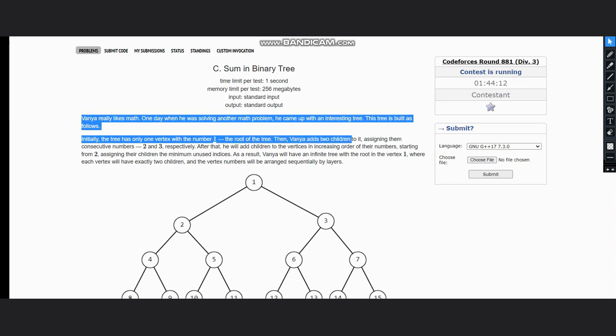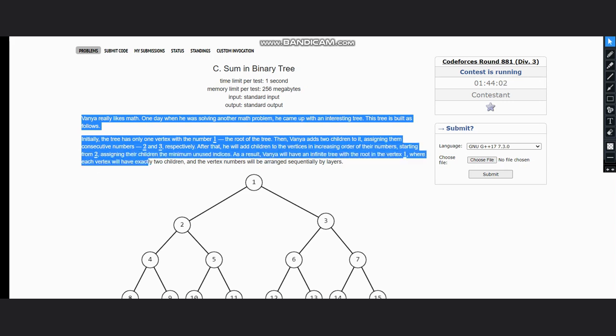This tree is built as follows: initially the tree has only one vertex with number one, the root of the tree. Then Vanya adds two children to it, assigning them consecutive numbers two and three respectively. After that, he will add children to the vertices in increasing order of the numbers starting from two, assigning their children the minimum unused indices.